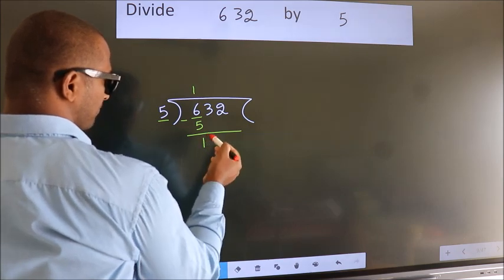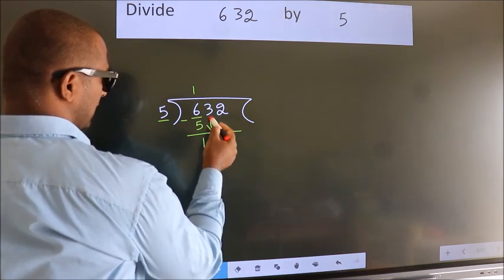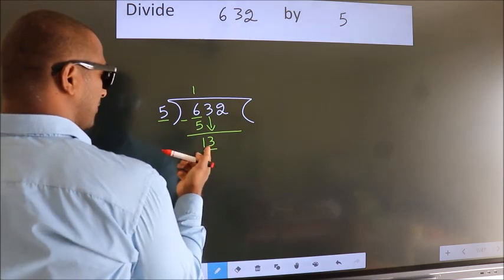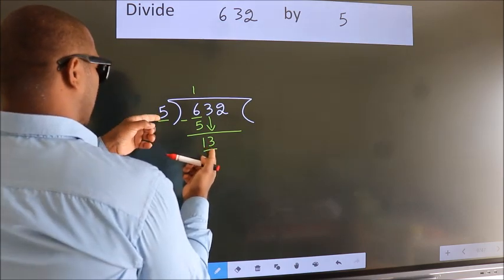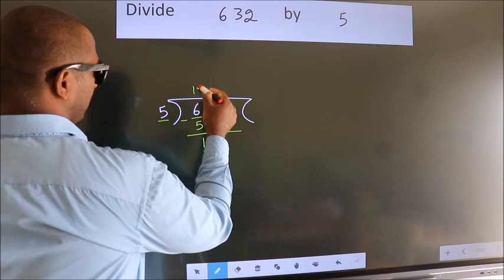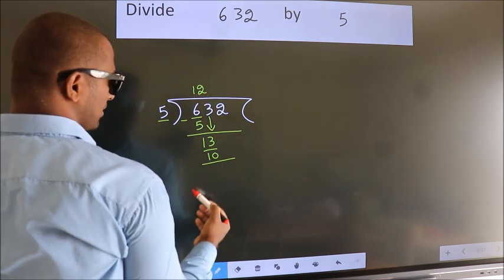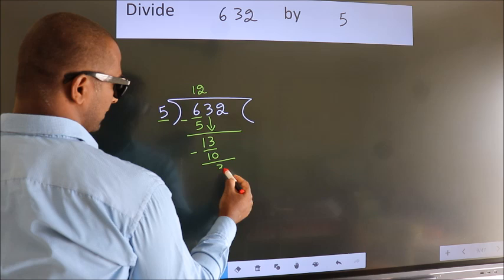After this, bring down the beside number. So 3 down, so 13. A number close to 13 in 5 table is 5 2s 10. Now we subtract. We get 3.